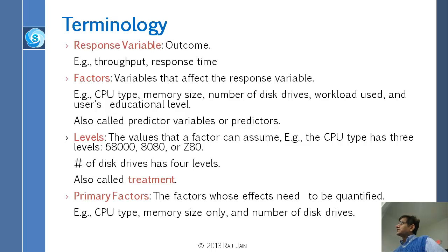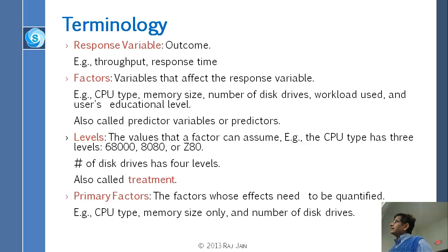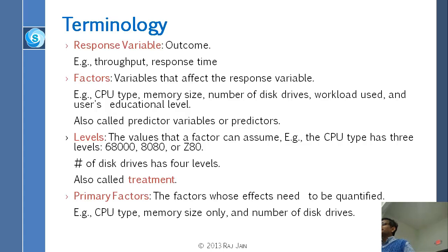Here are the key words. Response variable — we had learned that word in regression — is the Y variable, the outcome, which could be throughput or response time. Factors are basically the X variables: CPU type, memory size — these are all the factors. Levels: I chose the word level because that is more computer-science-like than the word treatment. In most books on experimental design, they use the word treatment, which is good for medical and agricultural applications, but in computer science we use the word level.